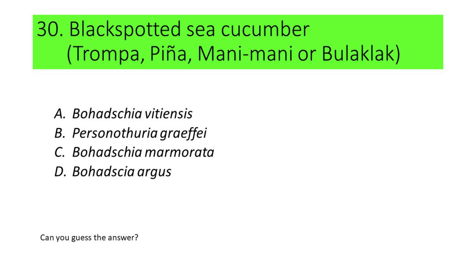Number 30, the last question. This species of sea cucumber is called black spotted sea cucumber. Locally, this is called trompa, piña, mani-mani, or bulaklak. A. Bohadschia vitiensis, B. Pearsonothuria graeffei, C. Bohadschia marmorata, and D. Bohadschia argus. Can you guess the answer?